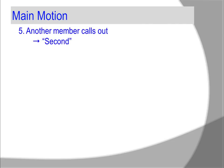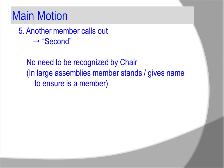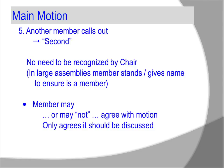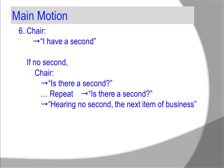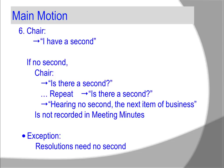Another member calls out 'second' — there is no need to be recognized by the chair. In large assemblies, a member may need to stand and give a name to ensure it is a member making the second. A member may or may not agree with the motion; they only agree that the motion should be discussed. The chair states 'I have a second.' If no second, the chair asks 'Is there a second?' and hearing none states 'The next item of business is...' This motion is not recorded in the meeting minutes because there was no second. The exception is resolutions — resolutions don't need a second because they are formed by a group of people, not one person.